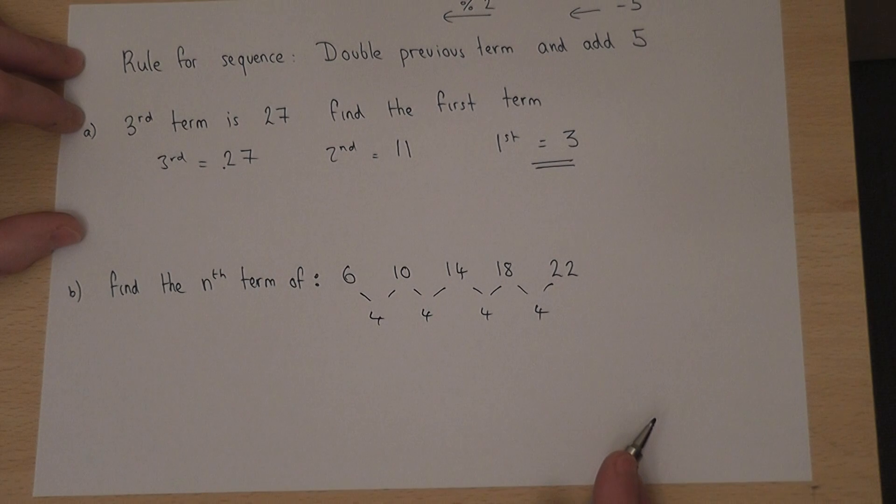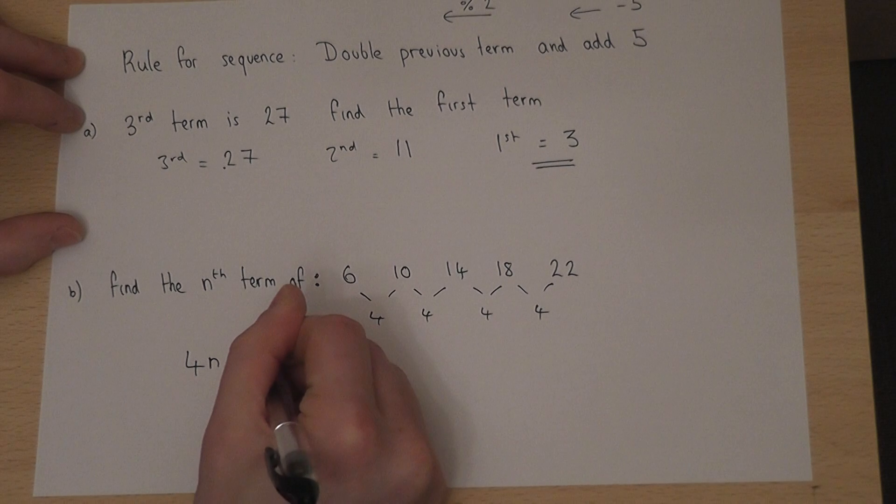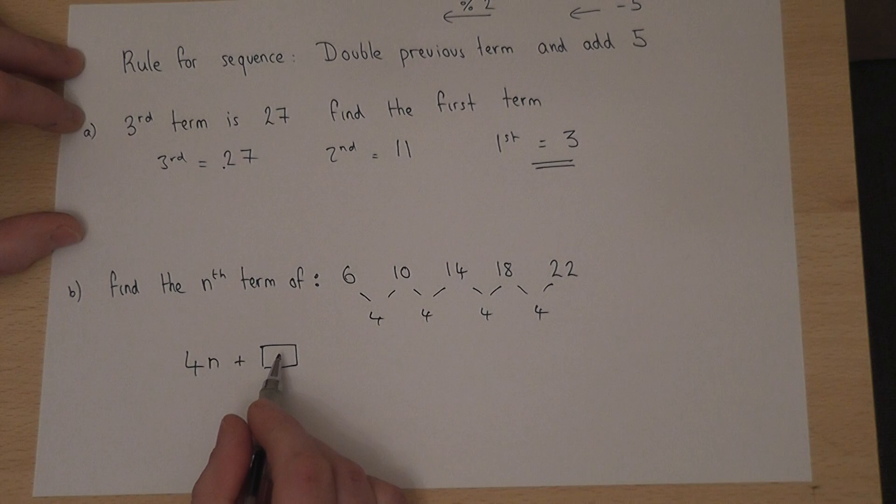Now, this means that the nth term is of the form 4n plus something. Now, to get the something, we think right.